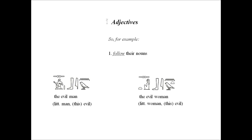Something you should notice is that adjectives agree with their nouns. In the female part, where the woman and its adjective follow, you have both T's, which you don't have in the male or masculine form. This shows us that the adjective evil has to follow the feminine word, and thus the T is added to show that it agrees.